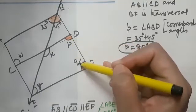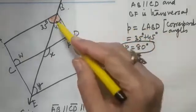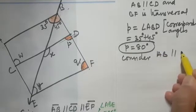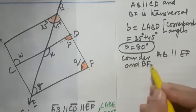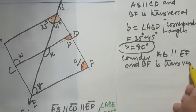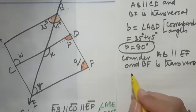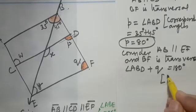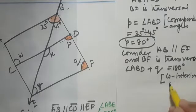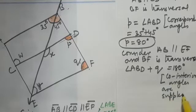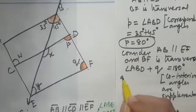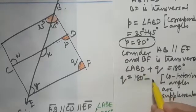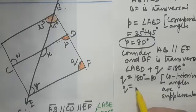So P plus Q should be 180 degrees. Here we consider AB parallel to EF and BF is transversal. So angle ABD plus Q is equal to 180 degrees, and the reason is that they are making a pair of co-interior angles — co-interior angles are supplementary. So Q will be equal to 180 degrees minus angle ABD. ABD is 80 degrees, so Q comes out to be 100 degrees.